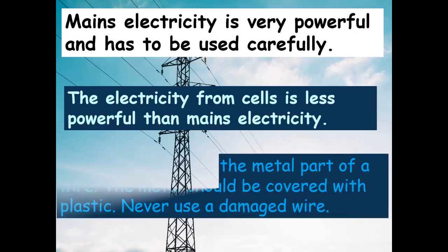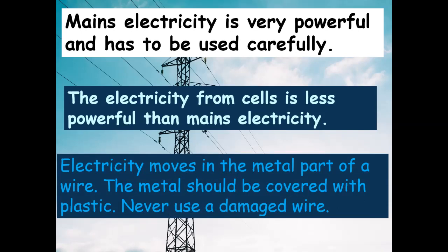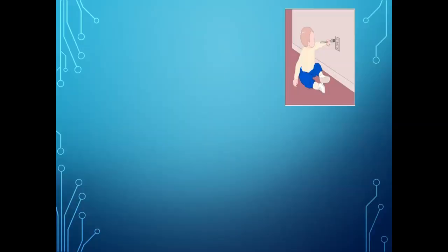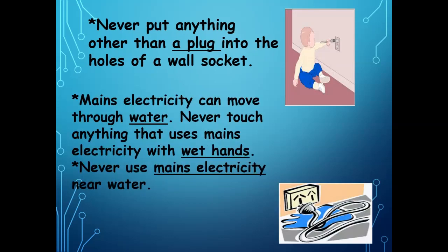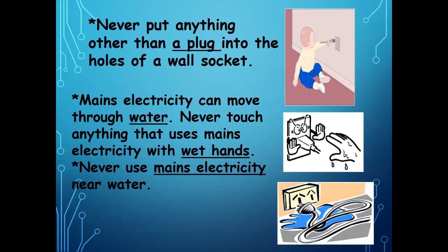Mains electricity is very powerful and has to be used carefully. The electricity from cells is less powerful than mains electricity. Electricity moves in the metal part of a wire; the metal should be covered with plastic. Never use a damaged wire. Never put anything other than a plug into the holes of a wall socket — it would be dangerous.